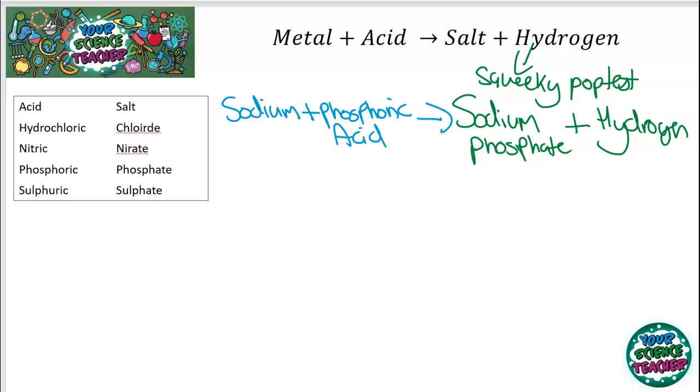And that basically works by putting a lit splint into a test tube full of hydrogen and observing a squeaky pop. It's important to remember the other ones such as hydrochloric always makes chloride salts. Nitric acid always makes nitrate salts. Phosphoric always makes phosphates. And sulfuric always makes sulfates. So, I'd make a note of that so you remember them. And this is the first way you learn about how to make salt.